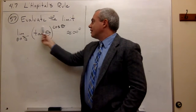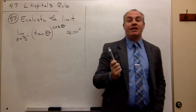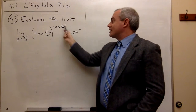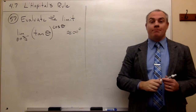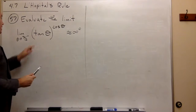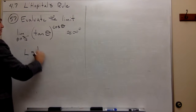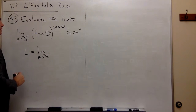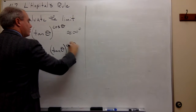I have thetas in the base and thetas in the exponent. When I have them in both places, that's a key to me that I need to use a natural log to get these thetas out of the exponent. So I need to set this problem up using a letter to represent what this limit is — I'm going to call it L. So L is equal to the limit as theta goes to pi over 2 from the left of tangent theta raised to the cosine of theta.